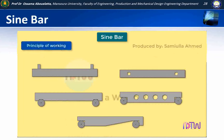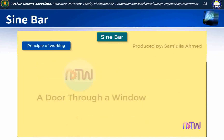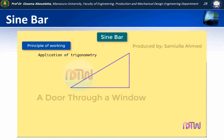Principle of Working of Sine Bar: The principle of operation of the sine bar is based upon the application of trigonometry. In a right-angle triangle ABC, the ratio of the length BC to that of the length AB is referred to as the sine of the angle theta. The ratio will always be the same irrespective of the length of sides of the triangle.